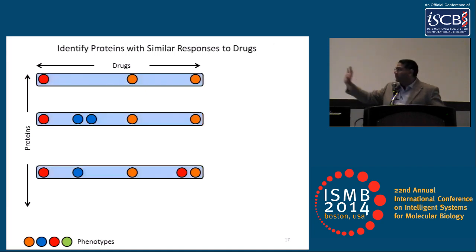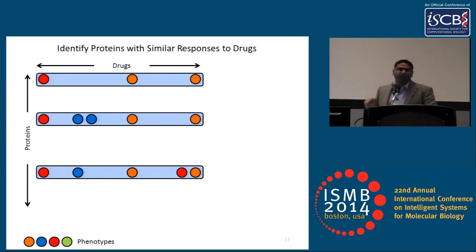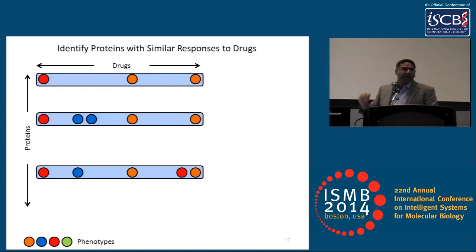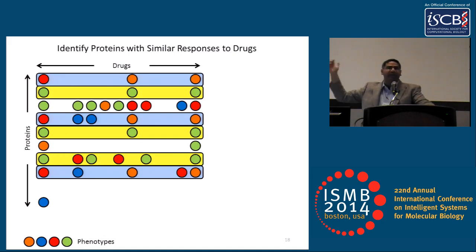One way we can do this is to identify proteins with similar responses to drugs. Here I'm showing one factor in blue. All three of these proteins we could consider to be the same factor because everywhere they've been co-observed under the same drug, we saw the same phenotype — all the way on the left-hand side, these three proteins had this red phenotype in this cartoon. Repeating this process across all the proteins allows us to identify every protein with a different factor, and the number of factors is less than or equal to the number of proteins.